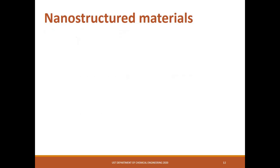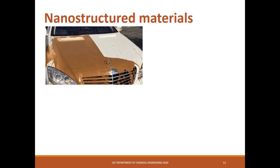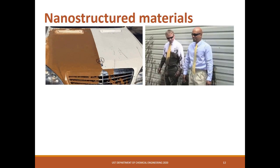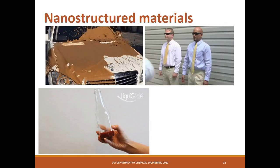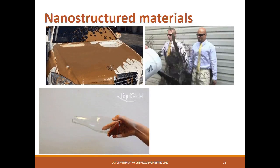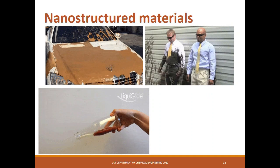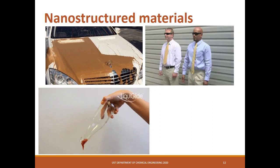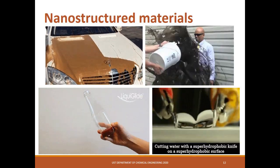One application of nanostructured material is a superhydrophobic coating. Surfaces such as cars and clothes will not easily get wet or dirty. Ketchup will not stick to the bottle and can easily be poured out. And surprisingly, using hydrophobic coating, water can be cut into two.